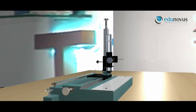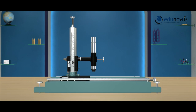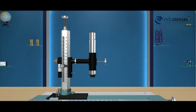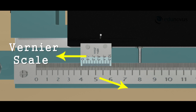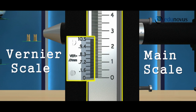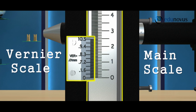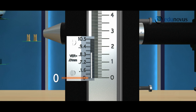A traveling microscope is a compound microscope fitted vertically on a vertical scale. The base consists of leveling screws which help in adjusting the base horizontally. It has a horizontal main scale and vernier scale, as well as a vertical main scale and vernier scale. At any given position, readings are taken by combining the main scale and vernier scale readings.